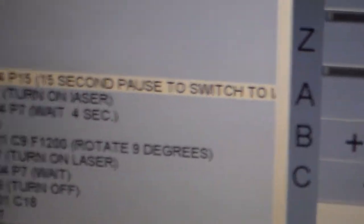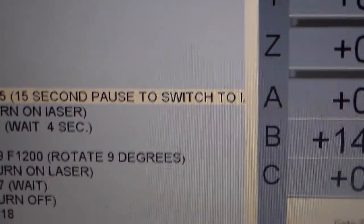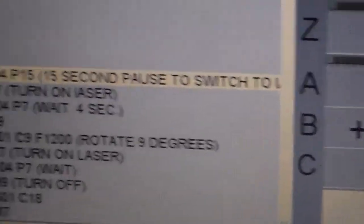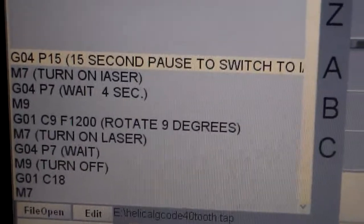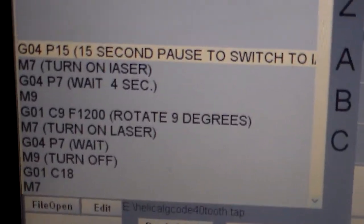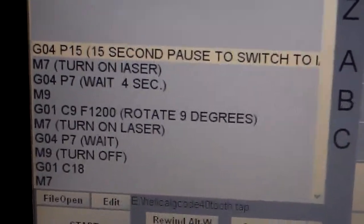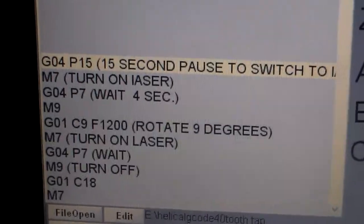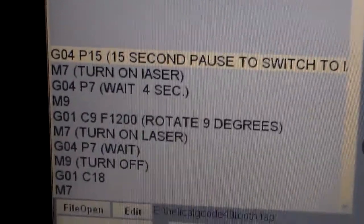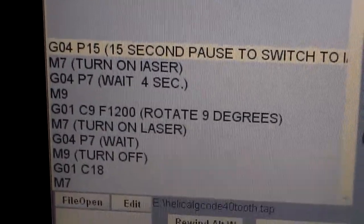And now the G-code, let's get in a little bit closer, is basically I've got to pause starting out so that I can switch from Mach 3 to my LaserWorks 6. Then you'll see that M7 turns on a relay that turns on the laser. Then there's a four-second delay to allow the laser to make the cut. Then the M9 tells the laser to go off.